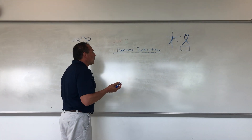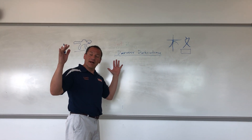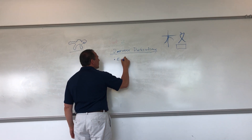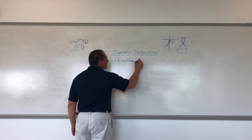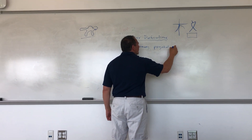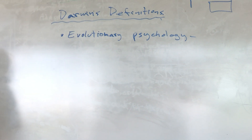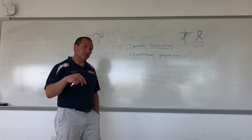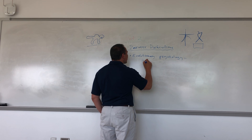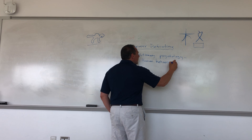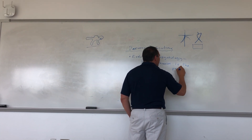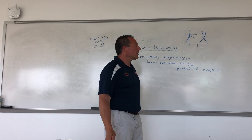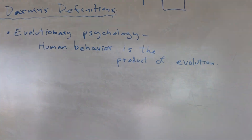There are a few specific definitions we will be going over. One of them is a very big idea that might not even be in the list of definitions, but it sits over all the definitions — and it's called evolutionary psychology. Evolutionary psychology is essentially the idea that human behavior is the product of evolution. We've already started talking about this a little bit.